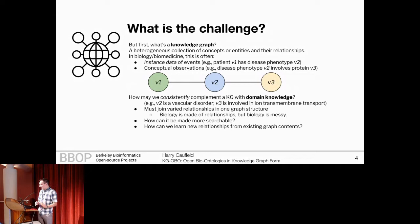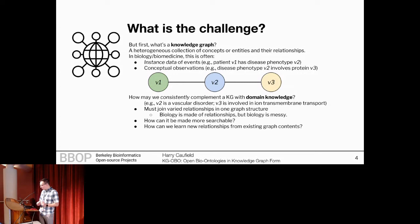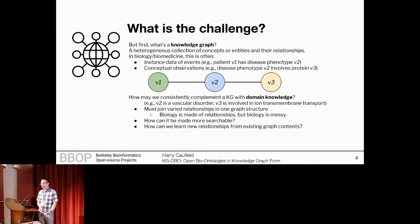So how do we consistently complement a knowledge graph and the relationships in there with that domain knowledge? This is something that we heard about in Melissa Handel's keynote not long ago. If we wanna be able to say something like V2 is a vascular disorder and V3 is involved in ion transmembrane transport, those are really critical to understanding the nature of those connected relationships. We need to join all those varied relationships in one consistent graph structure. Biology has already made a relationship, so that's intuitive, but biology itself is pretty messy. How can we make those relationships more searchable within the resulting knowledge graph, and how can we actually learn new relationships among those connections within a knowledge graph?